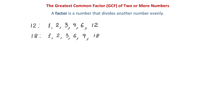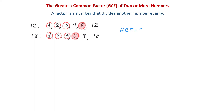Now, notice that some of the factors are the same for both 12 and 18. These are 1, 2, 3, and 6. Out of all these common factors, the largest one is 6, and we call it the greatest common factor. We can write that the greatest common factor is 6.